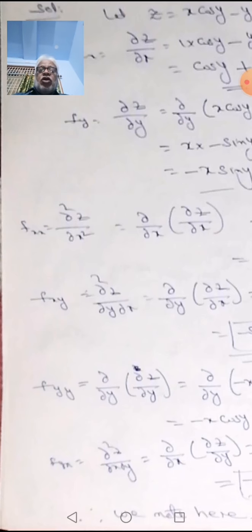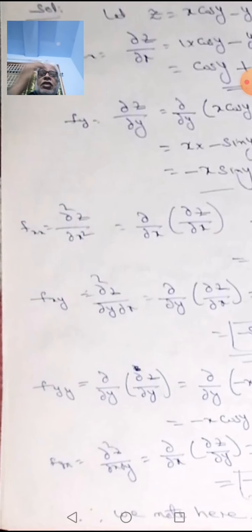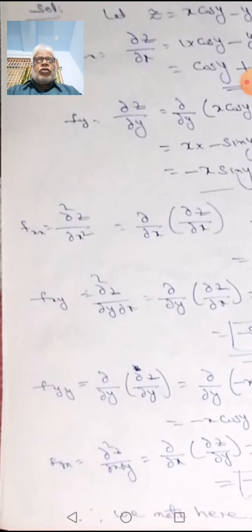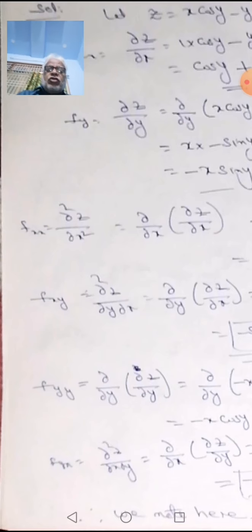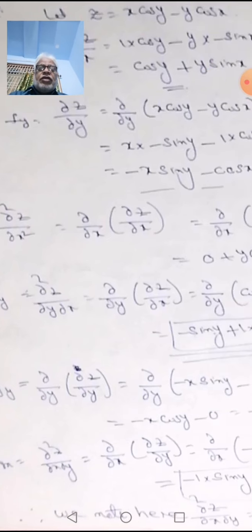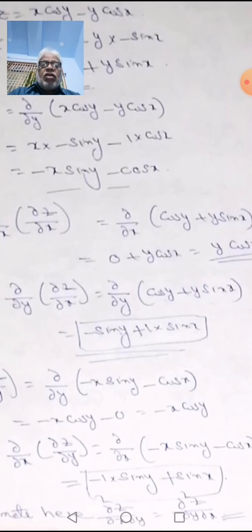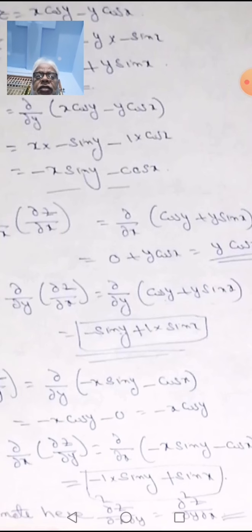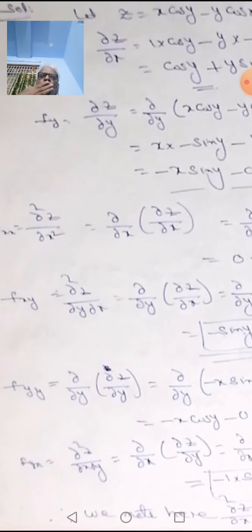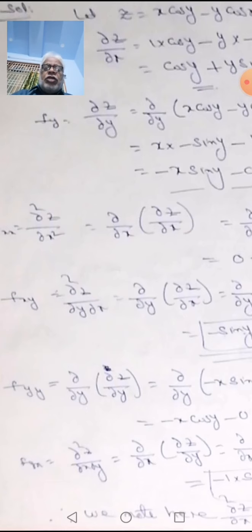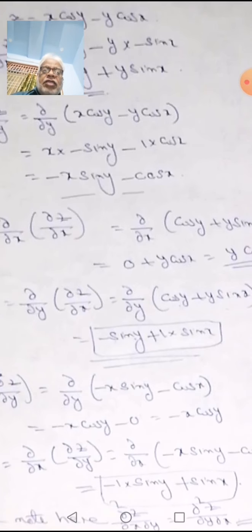For the mixed derivative dou²z/dou y·dou x: differentiate dou z/dou x with respect to y. dou z/dou x was cos(y) + y·sin(x). The derivative of cos(y) with respect to y is -sin(y). For y·sin(x), sin(x) is constant and derivative of y is 1, giving sin(x). So dou²z/dou y·dou x equals -sin(y) + sin(x).